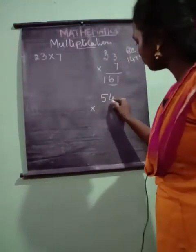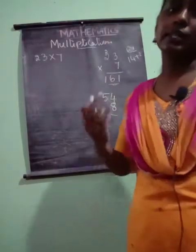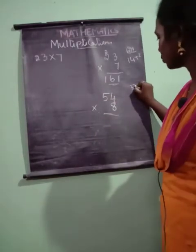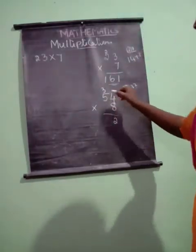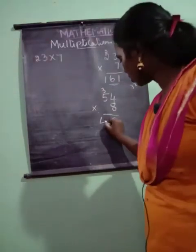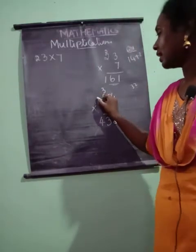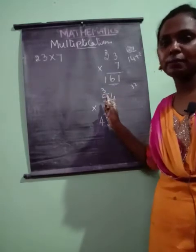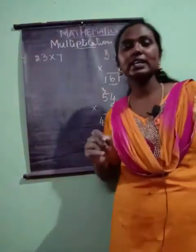So we do 54 into 8. Students, don't forget to write the symbol — for multiplication, write the 'into' symbol. Eight fours are 32, so write two and give three as a carry. Then eight fives are 40, plus 3 is 43. Since there is no other number after the tens place, we write both digits as they are. So there are 432 students in the school.